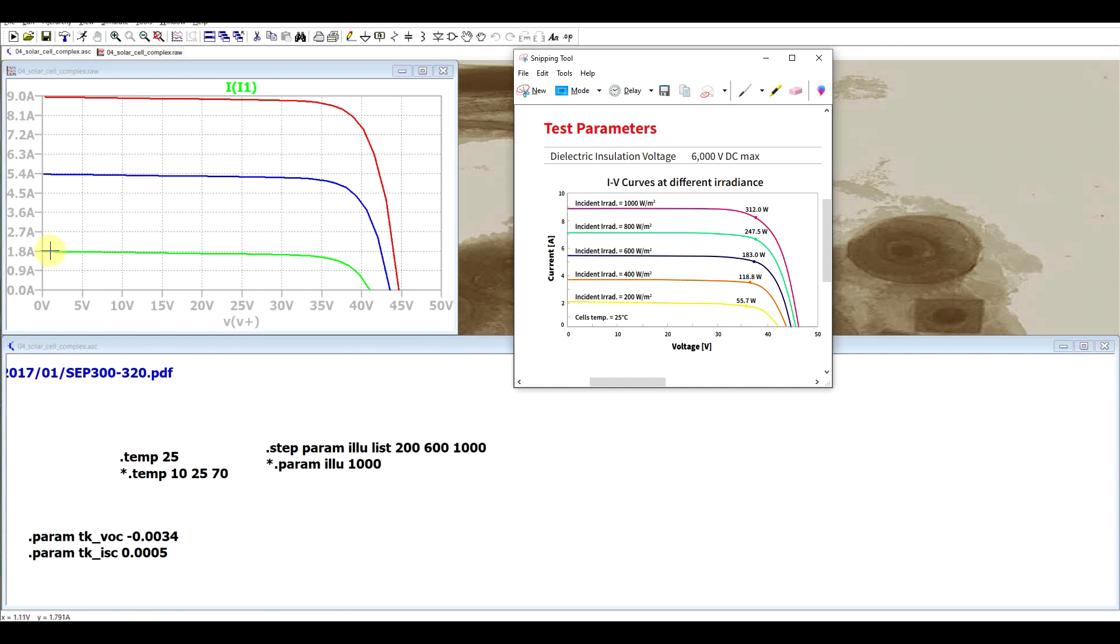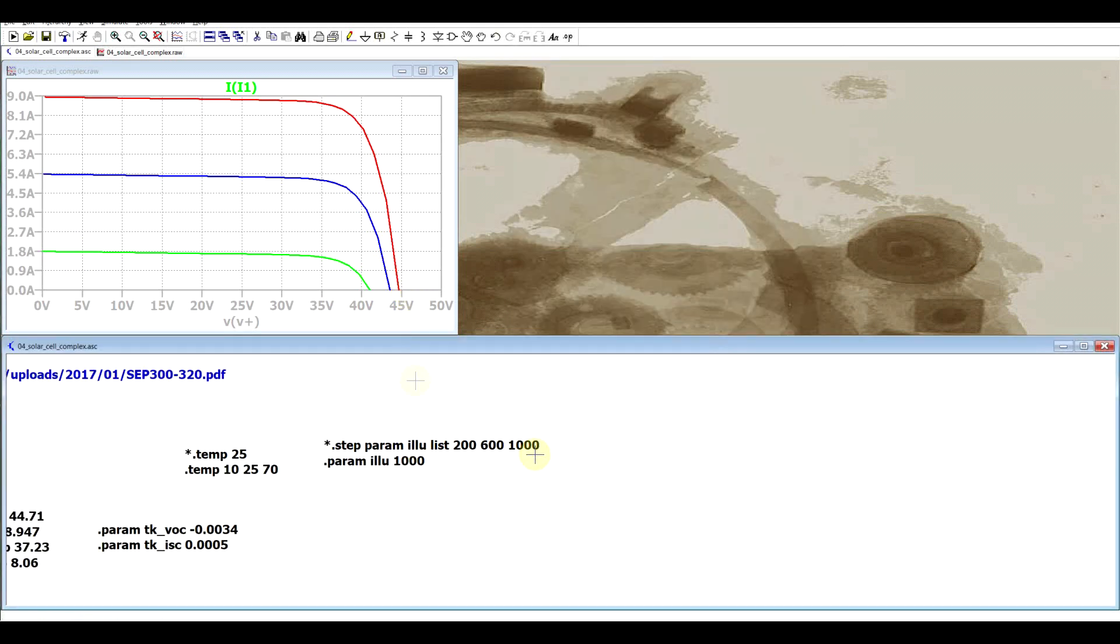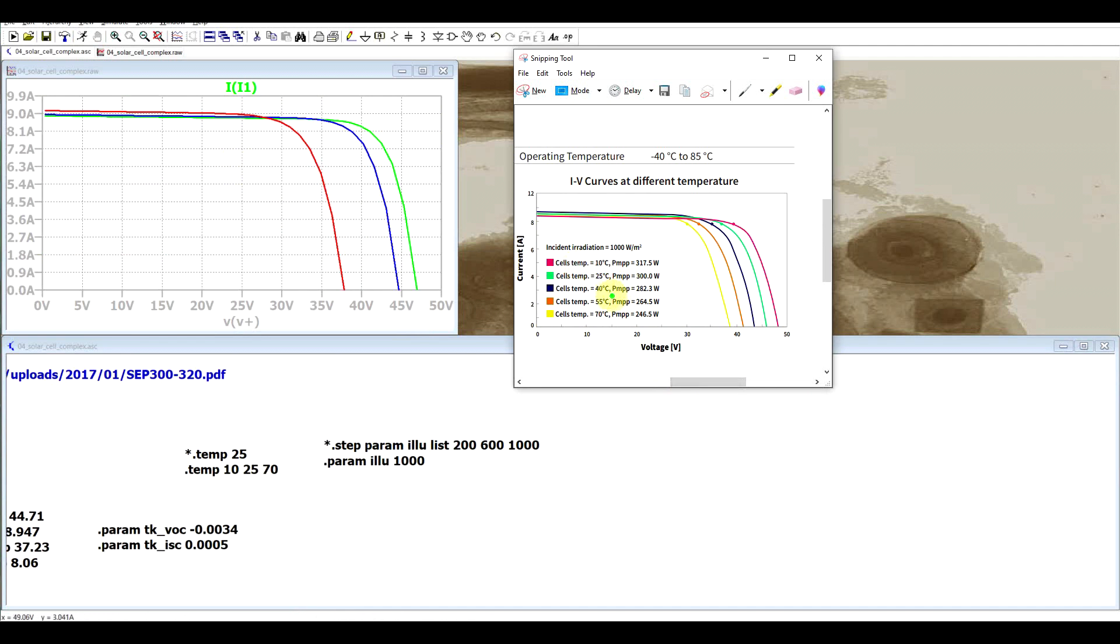Now if we change the parameter definition to simulate over multiple temperatures with a fixed illumination and we rerun the simulation again we can compare this to the datasheet. We are looking for the rightmost two curves, 10 degrees and 25 degrees, and then the leftmost curve 70 degrees. We can see again a fairly decent link between what our simulation is giving us and what the datasheet is giving us. So we can be fairly confident in our model.